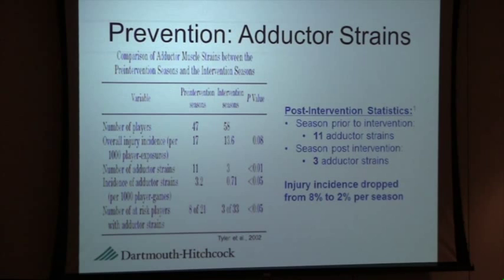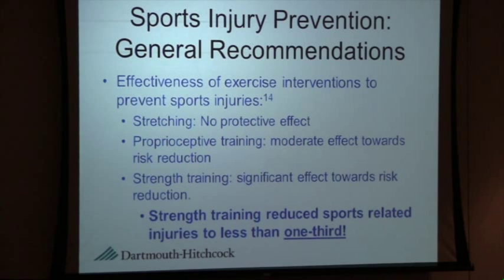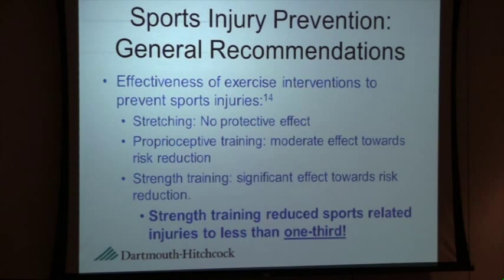A large meta-analysis reviewed all injury prevention studies in sports injuries and found that stretching offered very little to no protective effect, which is commonly found in the literature. Proprioceptive training offered a moderate effect towards risk reduction, and strength training offered a significant effect. The biggest take-home point was that strength training reduced sports-related injuries to less than one third.